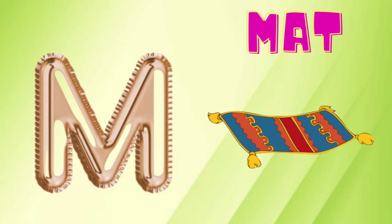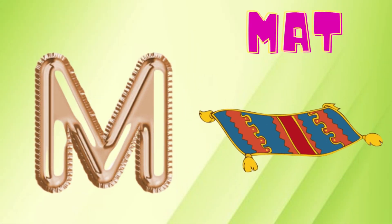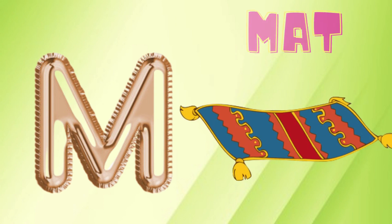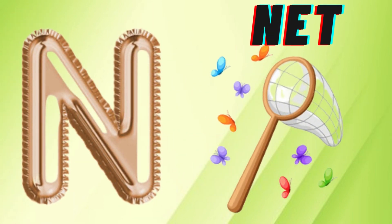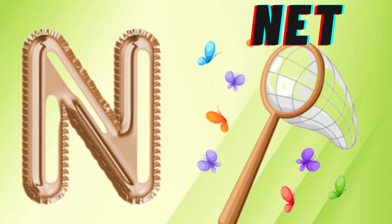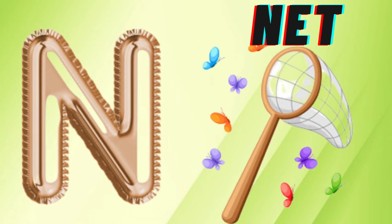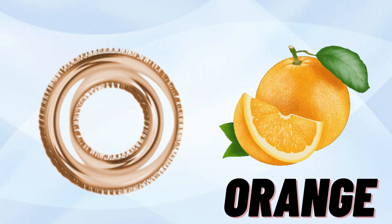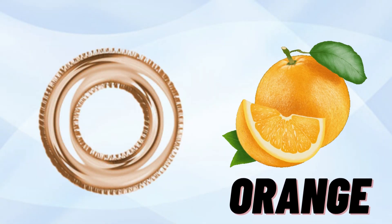M is for mat, m-m-mat. N is for net, n-n-net. O is for orange.